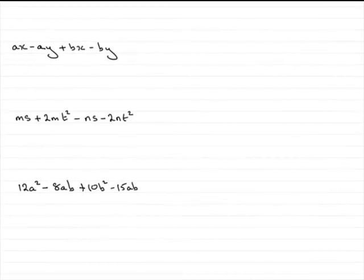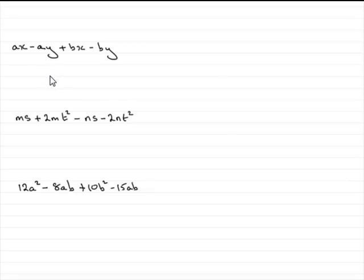Welcome to this, my second tutorial in my series on factorising. In the first tutorial I showed you that if we are asked to factorise an expression, the first thing you should always check is to see if there is a common factor. In these three expressions, if you were to try that, you would find that there is no common factor.